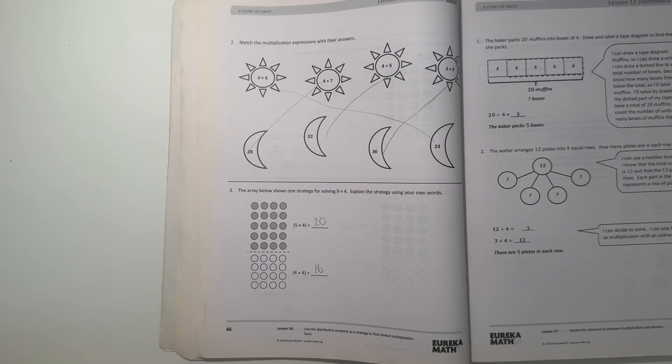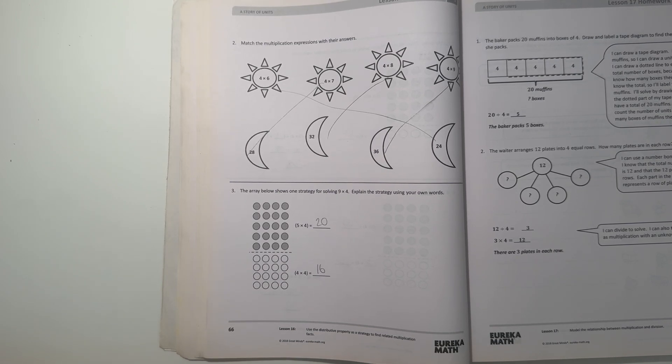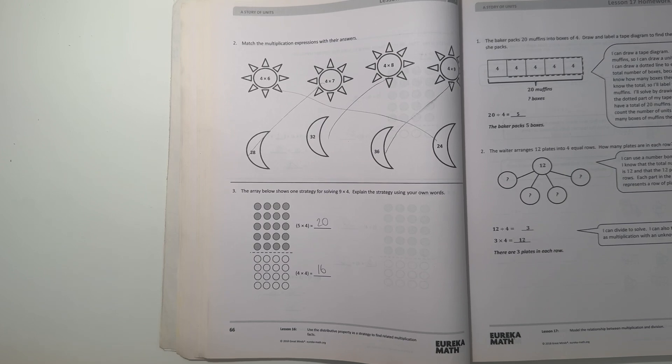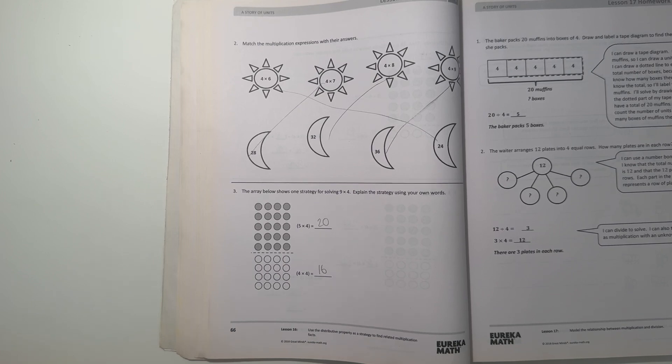What we're doing here is we're basically just breaking apart nine times four into two different parts, and we're solving those two parts and after adding the results to get the answer for nine times four.